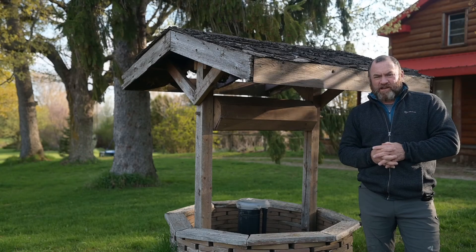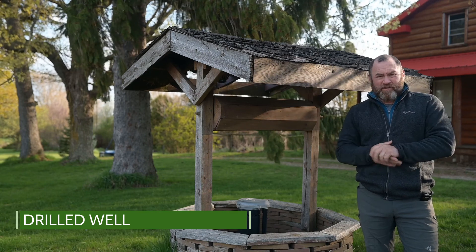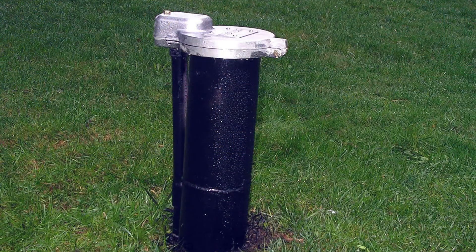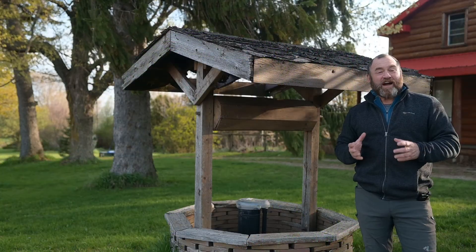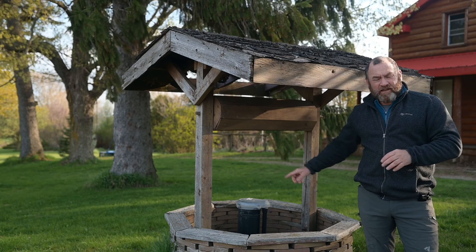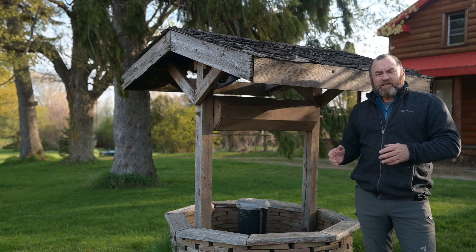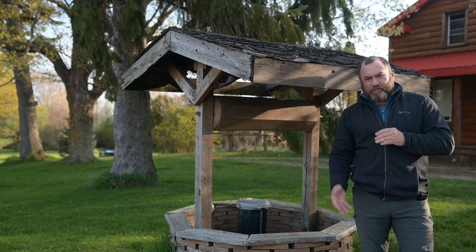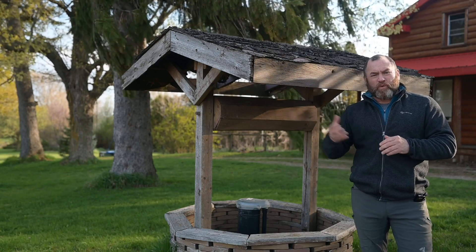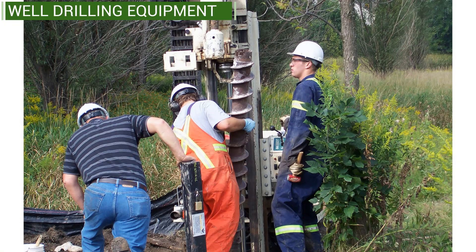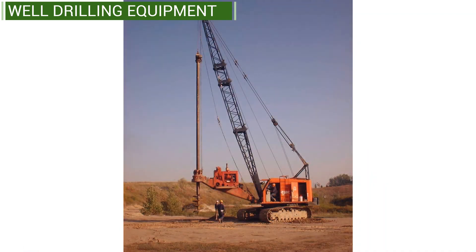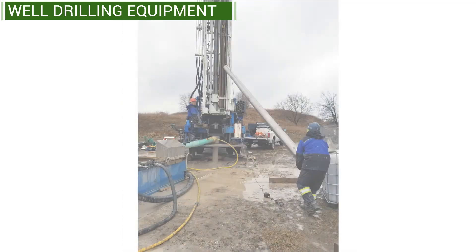The third type of well is a drilled well. Pete shows us his well at his farm outside the city — it has a lid and a black steel casing, and is about 25 meters deep. The lid is secure so nothing can fall into it. Drilled wells tend to give better water quality because they're deeper, so the water is further from the ground surface and less likely to be affected by shallow contamination. A pump at the bottom pumps water into the house.